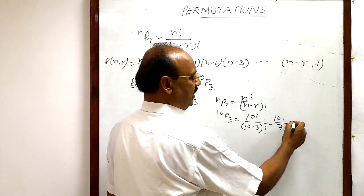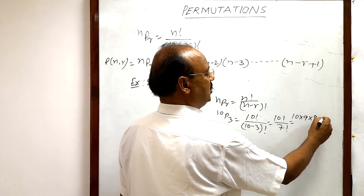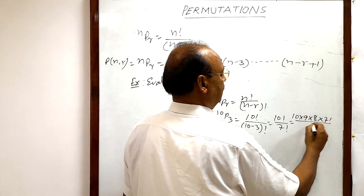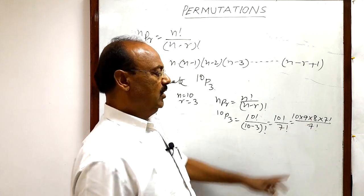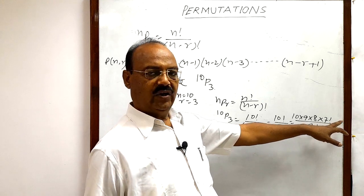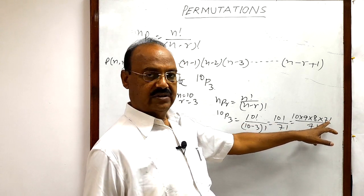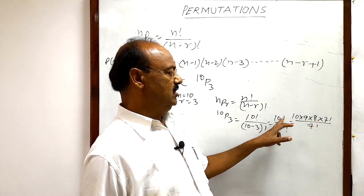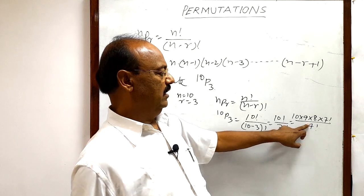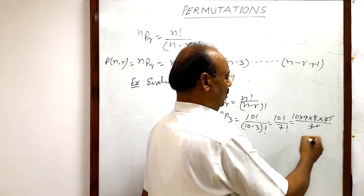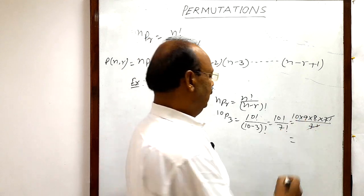We will simplify further. This 10 factorial is 10 into 9 into 8 into 7 factorial divided by 7 factorial. Here you might have understood it because 7 factorial has multiplications starting from 1, so 1 to 7 is here: 1 into 2 into 3 into 4 into 5 into 6 into 7 into 8 into 9 into 10. So this is 10 factorial and the denominator is 7 factorial. And here this 7 factorial will be cancelled out, so we are getting 8 into 9 into 10 is equal to 720.